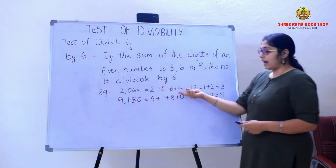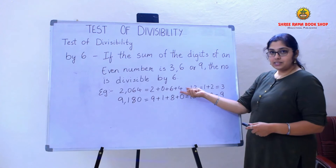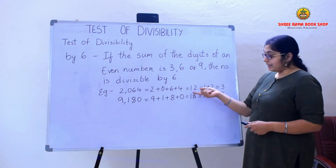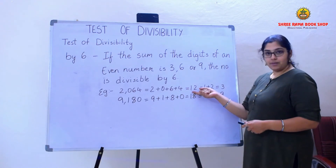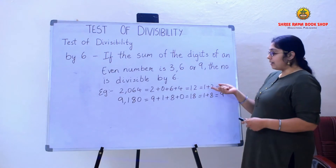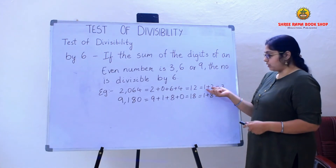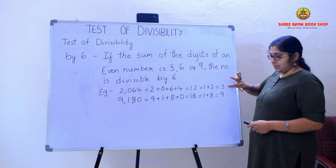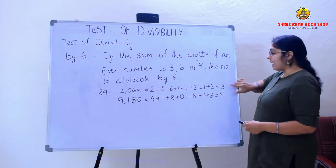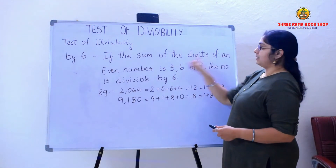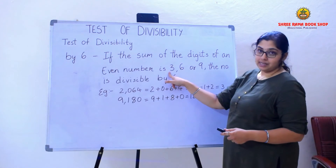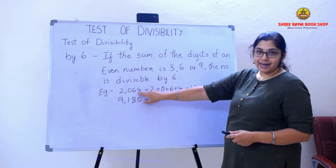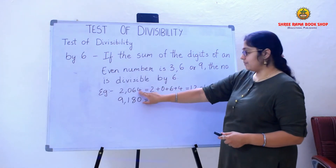As it is an even number, I have added all the digits of the number and got 12. Again, this is a two-digit even number, so I am going to add the digits of 12: 1 plus 2. The answer is 3. As I got the sum of the digits of an even number as 3, I can say that this number is divisible by 6.